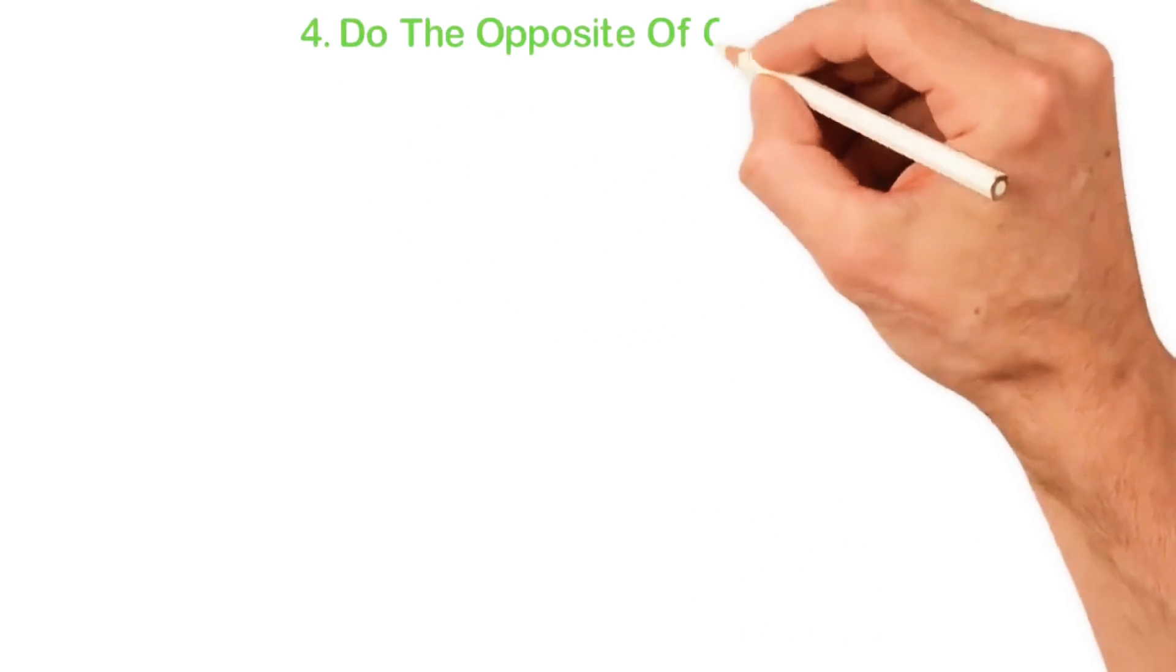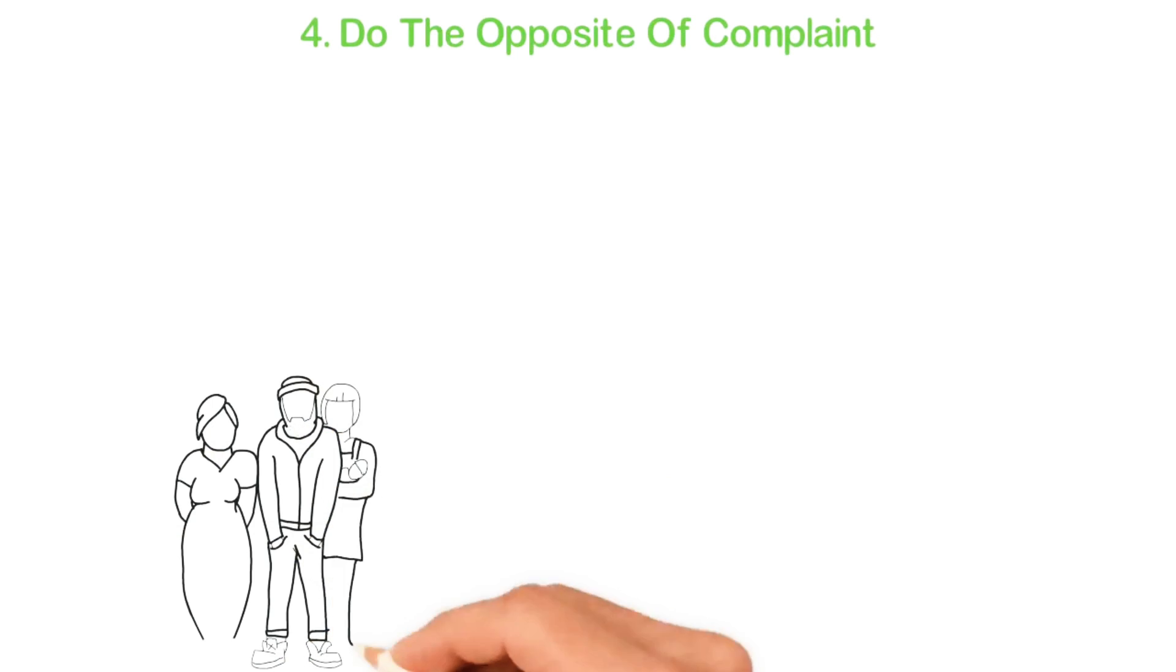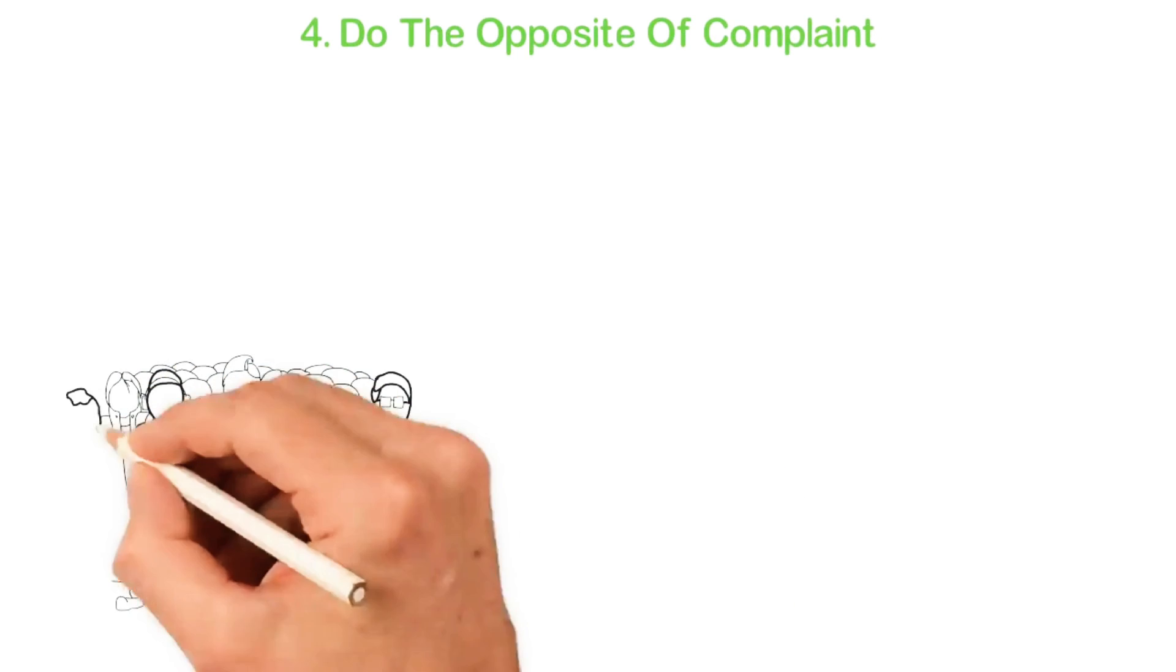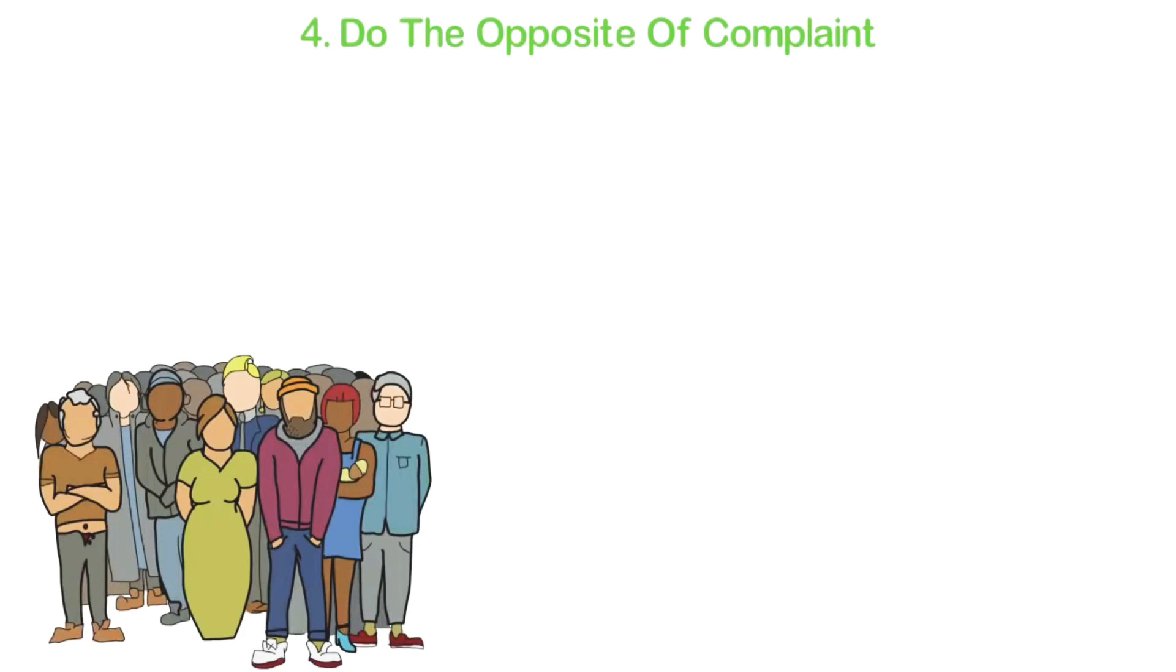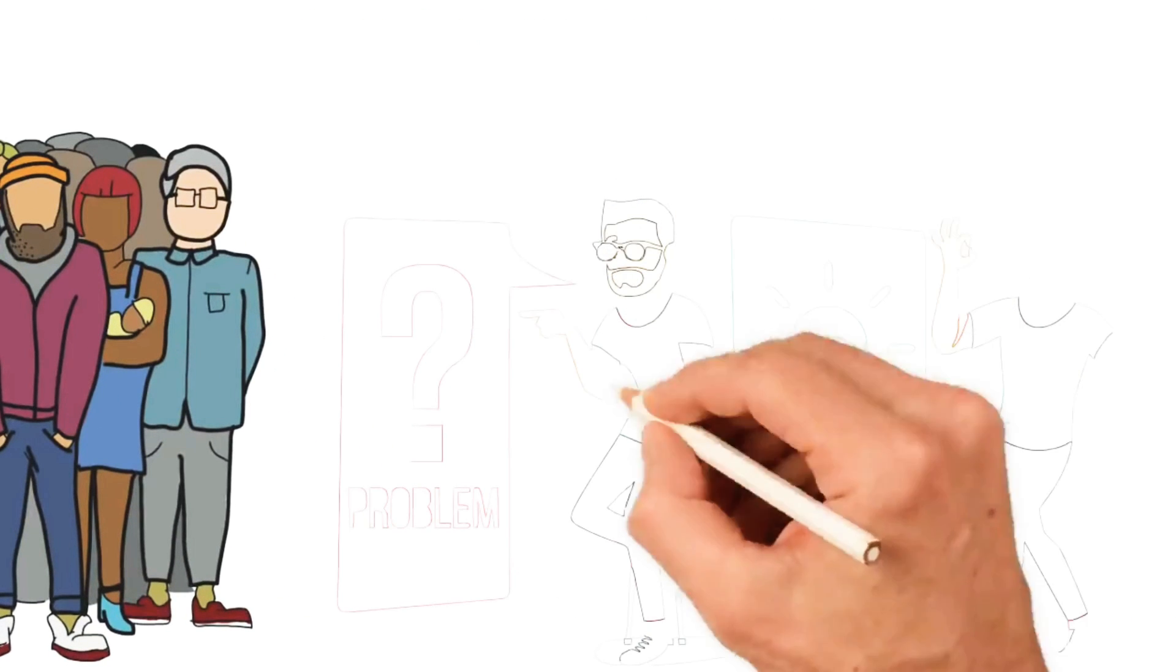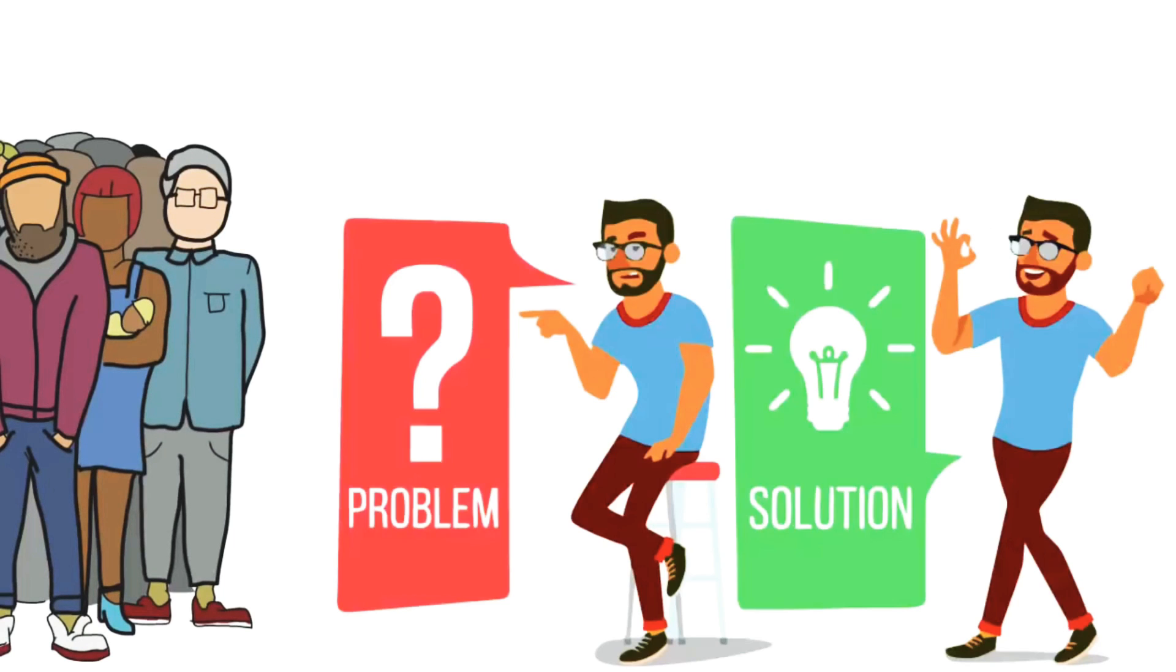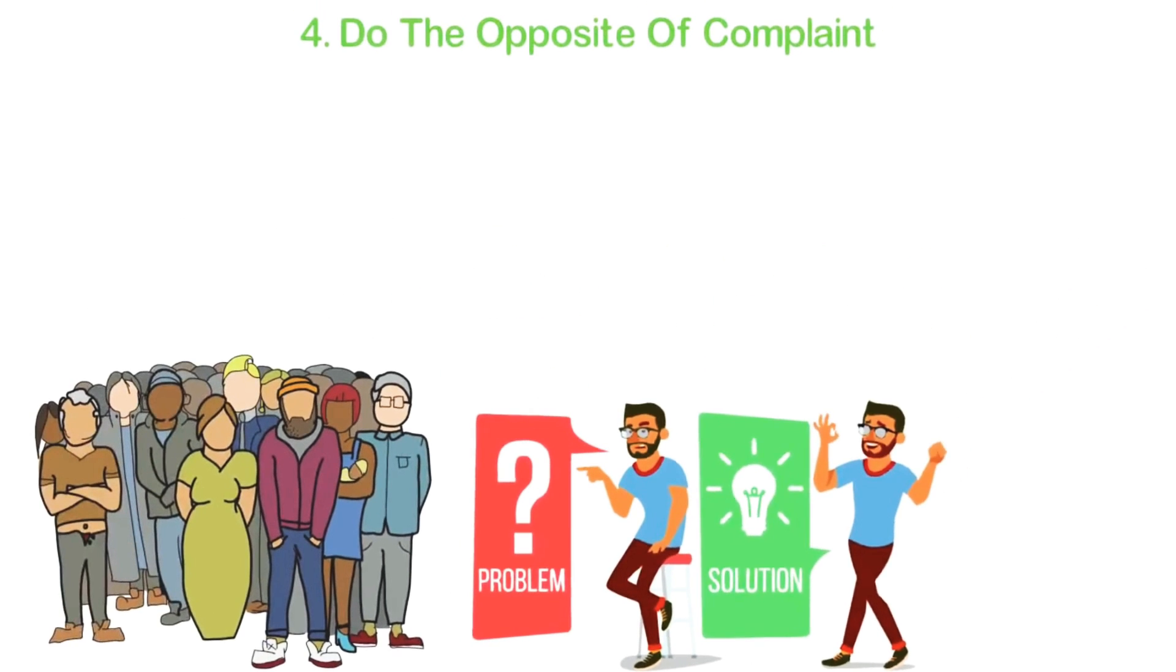Fourth, do the opposite of complaint. Everywhere you look in the world, you're going to see everyone complaining about everything. That's what we're trained to do because that's the easiest thing to actually do. Who on earth cannot open his mouth and complain about anything? What most people cannot do is to work towards solutions because this is a lot of work. Unfortunately, that's what you have to do.